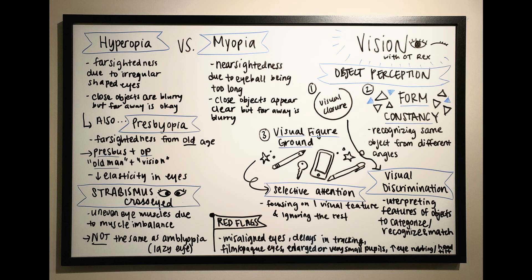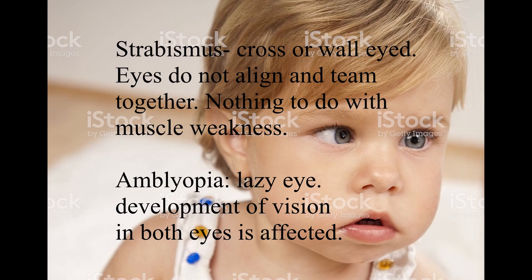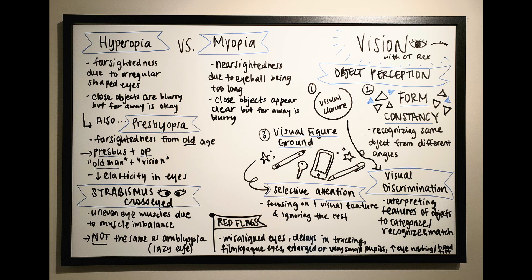Strabismus refers to being cross-eyed or wall-eyed, meaning your eyes do not align or team together, and it has nothing to do with muscle weakness. Strabismus is often confused with lazy eye, which is amblyopia. Amblyopia has to do with the development of our vision in both eyes — developmentally, vision doesn't develop correctly. Strabismus specifically has to do with being cross-eyed; it could be one eye that doesn't align or both, which is why it can sometimes look like amblyopia.